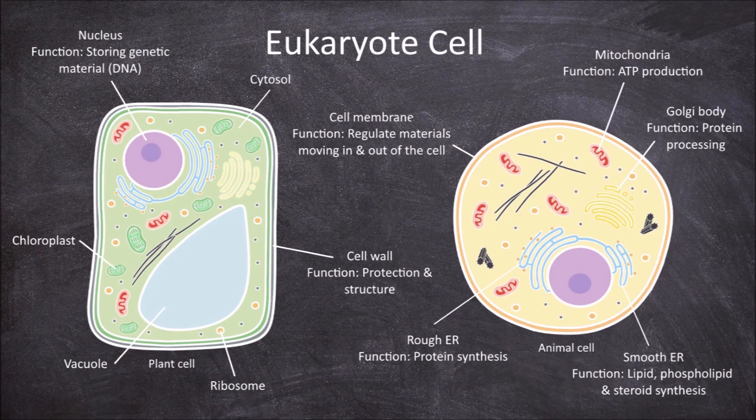Animal cells usually lack a vacuole, and if they have them, they are small and temporary. The main functions of a vacuole in plant cells are in storing water and in providing structural support due to the turgor pressure it provides within the cell.